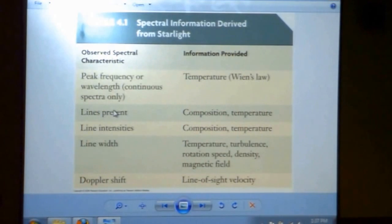If you see lines present, either absorption or emission lines, their presence and their intensities can tell you not only composition, but temperature. As we talked about with hydrogen, if it's cold, we'll get a Lyman series. If it's warmer, a Balmer series. If it's warmer, a Paschen series. Those are unique to hydrogen, so it tells us composition. It's also telling us the temperature, depending on what series we actually see.